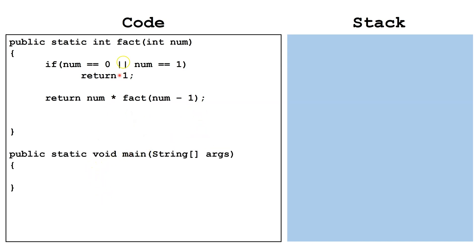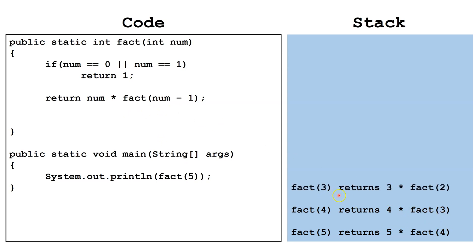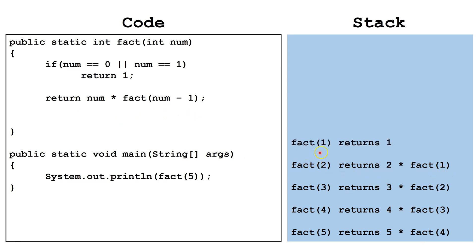Here we have created our main method so we can call our recursive method fact. We are going to System.out.println whatever is returned by fact when we pass it the argument five. So on the stack we place fact(5), our first call, and we say that's going to return five times fact(4). Next, fact(4) will return four times fact(3). Fact(3) will return three times fact(2). Fact(2) returns two times fact(1). And finally, when we pass one to the parameter, we go to our base case and simply return one.